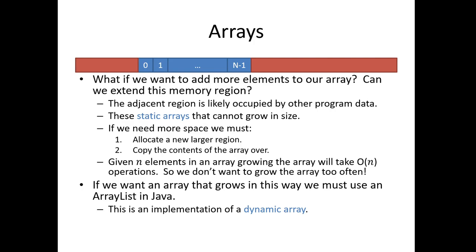This idea of taking a fixed-size array, doubling it in size, copying over the old elements, and then using the new array to keep adding elements to it is what we call a dynamic array. In Java, we call these array lists. This is an array implementation of the list where if the array list gets full, we're going to double it in size and copy the elements over with this expensive operation.